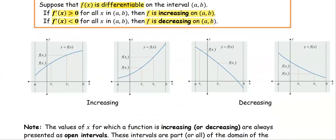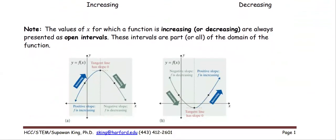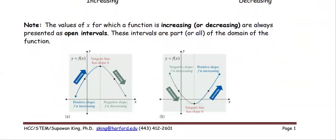On the graph, when x₁ < x₂ and f(x₁) < f(x₂), the graph is increasing. The last two graphs represent the decreasing case where x₁ < x₂ but f(x₁) > f(x₂). Note: the values of x for which a function is increasing or decreasing are always presented as open intervals, and these intervals are part or all of the domain. One graph can have a combination of increasing and decreasing behavior.